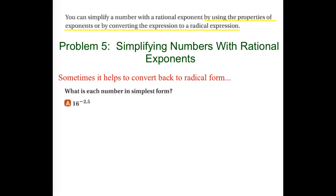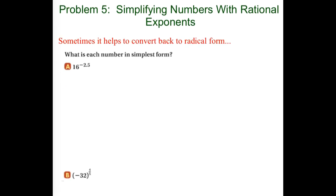We are looking at simplifying expressions that have rational exponents in them. Our note here says you can simplify a number with a rational exponent by using the properties of exponents — when do we add the powers, when do we multiply them. And then also by converting the expression to a radical expression. Sometimes it helps to convert back to radical form.